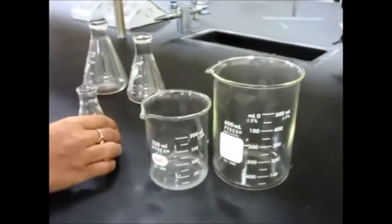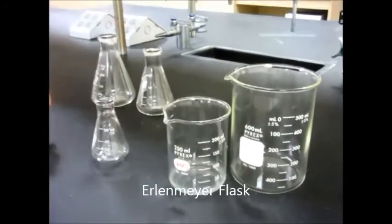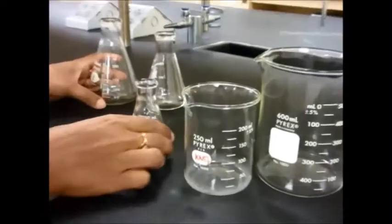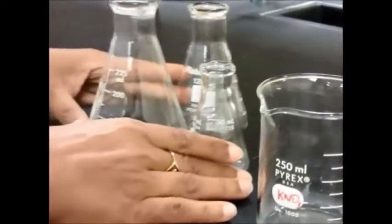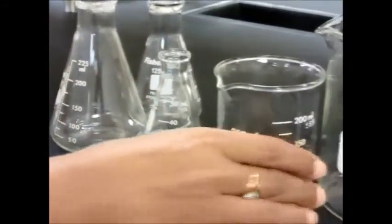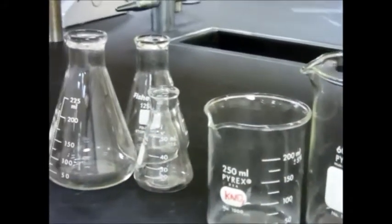You can have Erlenmeyer flasks, which are also known as conical flasks. Again, they come in different sizes. This is 50, this is 250, this one is 125. So depending on how much volume you need, you take that kind.